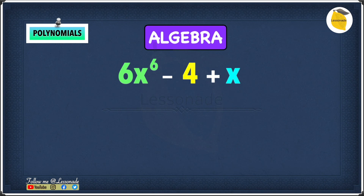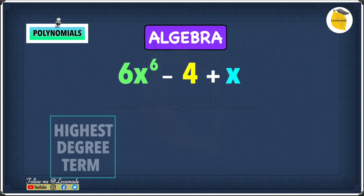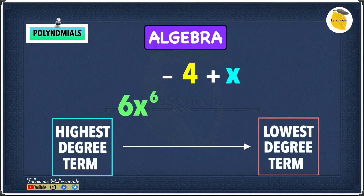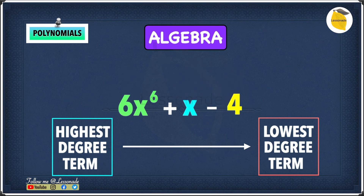The thing to remember is that not every polynomial has a term of every degree. For example, 6x to the power of 6 minus 4 plus x does not have a term of every degree. But it's totally fine for polynomials to have missing terms. We still have to arrange this in order from the highest degree term — 6x to the power of 6 — to the lowest degree term, which is minus 4.